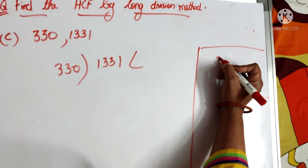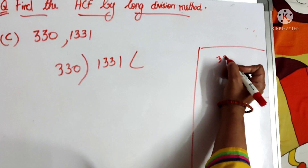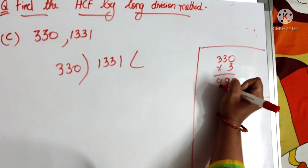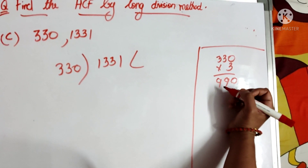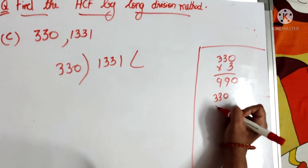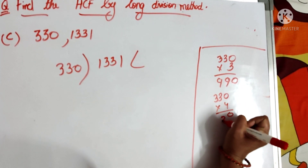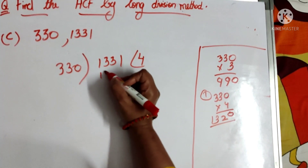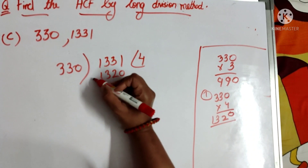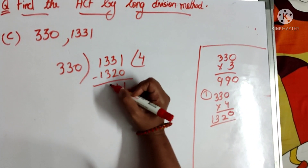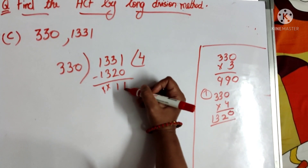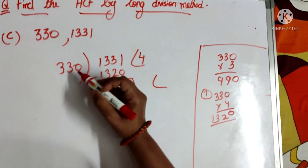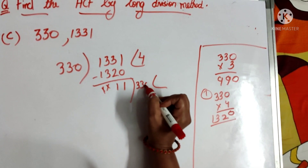330 into 2 is 660, 330 into 3 is 990, 330 into 4 is 1320 — that is less than 1331. So it goes by 4: 4 times 330 is 1320. The remainder is 1331 minus 1320 = 11. So we got remainder 11. This 11 becomes the divisor and the previous divisor, 330, becomes the dividend.